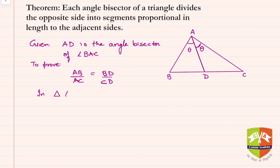So this becomes 180 minus phi, isn't it? So AB upon sin phi will be equal to BD upon sin theta.